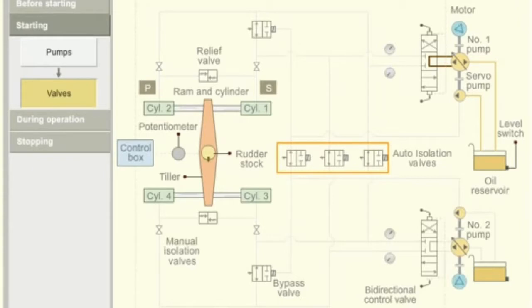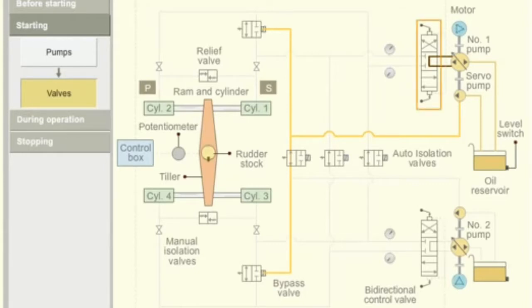Electrically operated isolating valves are kept in open position. Bypass valve is activated to closed position by the oil supplied by the servo pump. When no helm is ordered, the bi-directional control valve is in mid position.